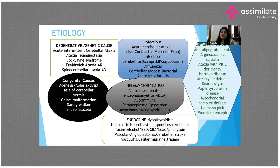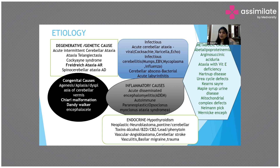A few endocrine disorders, drugs, and toxins also predispose to ataxia. Drugs responsible include lead, phenytoin, carbamazepine, alcohol, and benzodiazepines — in excess dose or sometimes at normal dose, they can lead to ataxia. Some neoplasms like neuroblastoma, pontine and cerebellar tumors, endocrine problems like hypothyroidism, and vascular accidents such as stroke in the posterior cerebellar arteries — whether due to blockage, hemorrhage, or inflammation — as well as trauma, can all manifest as ataxia.